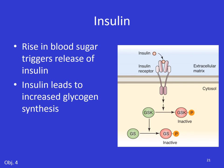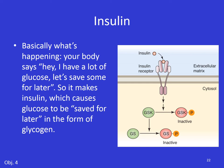In your body, if you eat something, that rise in blood sugar from consuming glucose triggers the release of insulin. What insulin does is it leads to increased glycogen synthesis. Your body says: I just ate something, now I've got a lot of glucose but I don't need it all right now — let's save it for later. So it makes a bunch of insulin, and that insulin causes glucose to be saved for later in the form of glycogen.